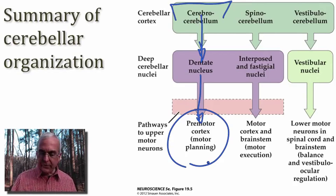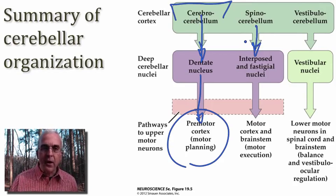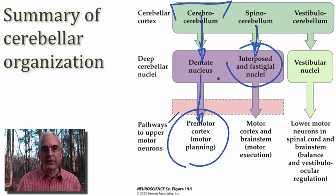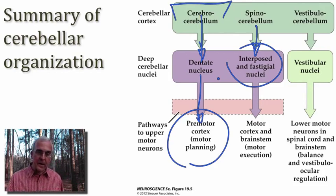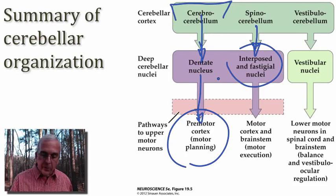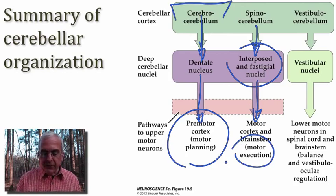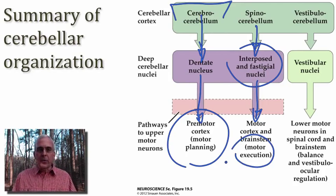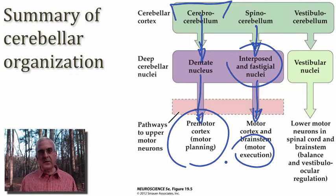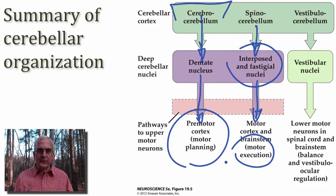The spinal cerebellum sends its inputs to the more medial parts of the deep cerebellar nuclei, engaging the interpose and vestigial nuclei. The interpose nuclei grow connections that impact the motor thalamus and can directly affect the output of the motor cortex, while also growing axons into the brainstem reticular formation. Together these inputs govern the execution of behavior and are more associated with control of the proximal parts of our limbs, postural muscles, and muscles used for locomotion.